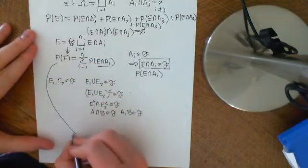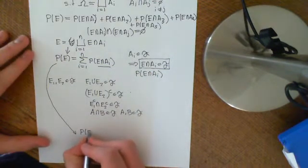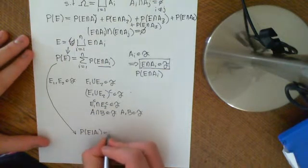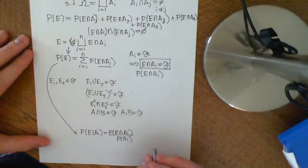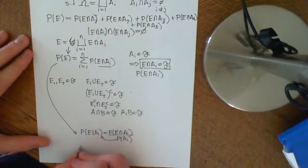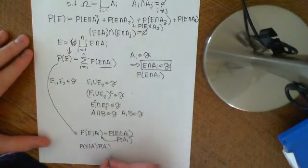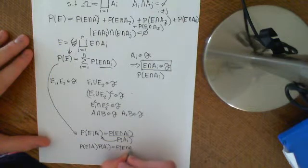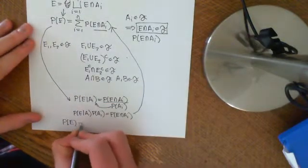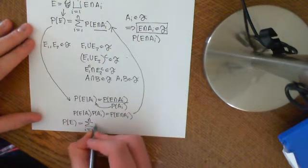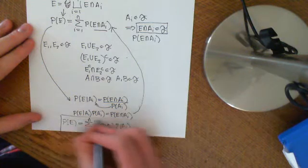We now apply the conditional probability rule. We know that P(E | Ai) = P(E ∩ Ai) / P(Ai). Multiplying both sides by P(Ai) gives P(E | Ai) · P(Ai) = P(E ∩ Ai). Substituting this into our earlier formula, we get that the probability of E equals the sum for i = 1 to N of P(E | Ai) · P(Ai). And that is the law of total probability.